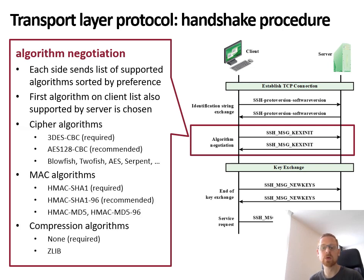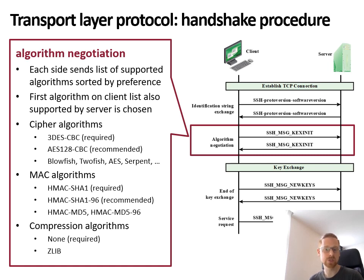Here you can see an overview of some of the algorithms that are supported. Some are required, meaning they have to be supported by every SSH implementation. Some are recommended, meaning they are highly recommended to be implemented, and then there are optional ones. For confidentiality, Triple DES and AES-128, both with CBC mode, are required and recommended. For message authentication, HMAC with SHA-1 is required, SHA-1-96 is recommended, while others such as HMAC with MD5 are optional.